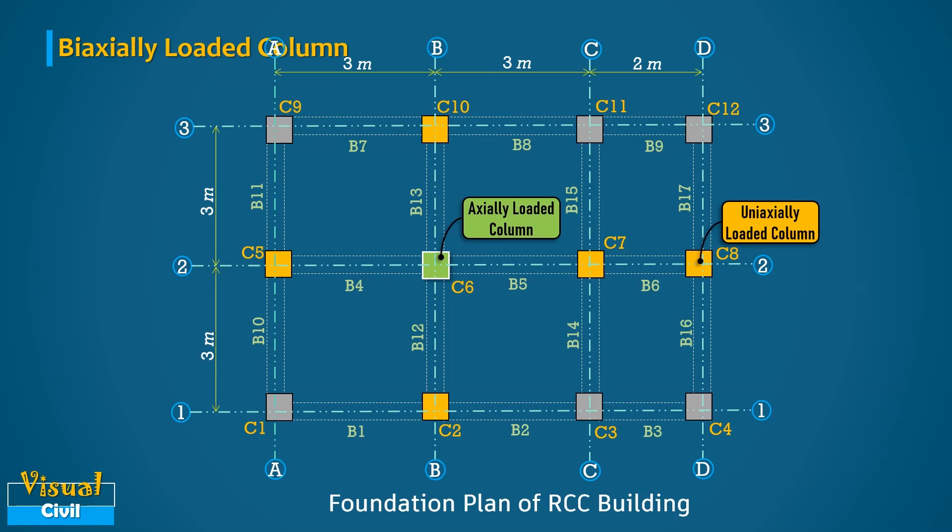In practice, these type of columns are common in corner columns like C1, C4, C9 and C12 with beams rigidly connected at right angles on the top of the column. The columns like C3 and C11 can also be categorized in biaxial loaded columns if the loading eccentricities due to unbalanced moment in both directions are significant.